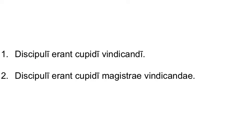Next: Discipuli erant cupidi vincandi. Hopefully you remember from our last lesson that cupidi is an adjective that usually raises the expectation of a genitive, which is what we have here with vincandi. The students were eager of avenging — basically, they were eager to avenge. And again, we're not saying who the students wanted to avenge in this first sentence.